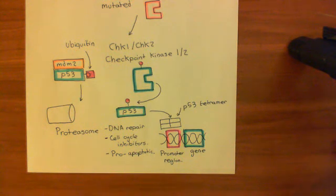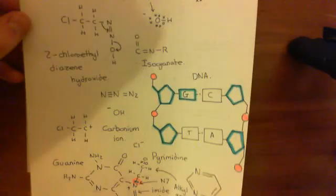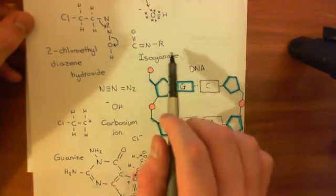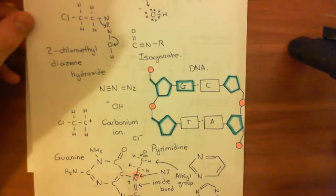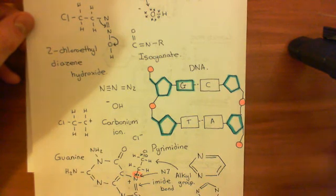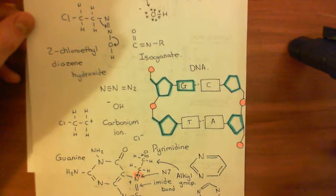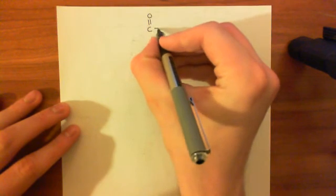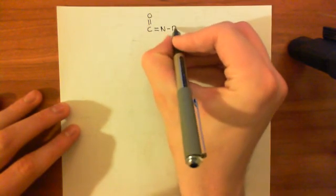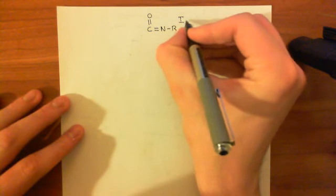So now, finally, what I want to turn my attention to is that other molecule that was made by the nitrosourea. I want to turn my attention to this isocyanate ion and what it's going to do. We've discussed the two-chloroephyl diazine hydroxide, which will produce these inter- and intrastrand crosslinks. Now let's discuss the isocyanate molecule. So the isocyanate molecule. So you've got this carbon double bonded to the oxygen, double bonded to a nitrogen, and then bonded to an R group. And this is the isocyanate molecule.